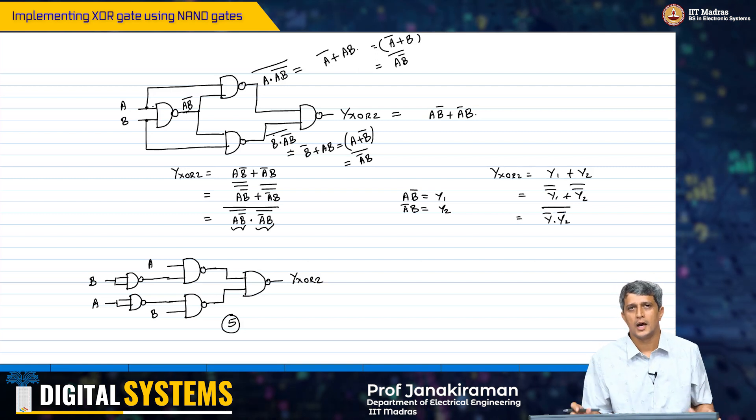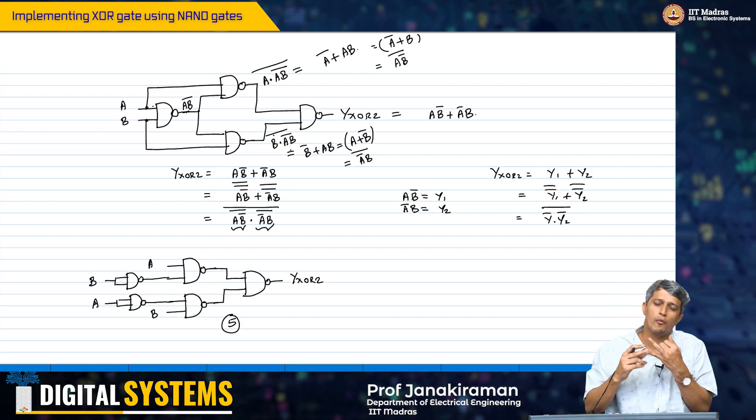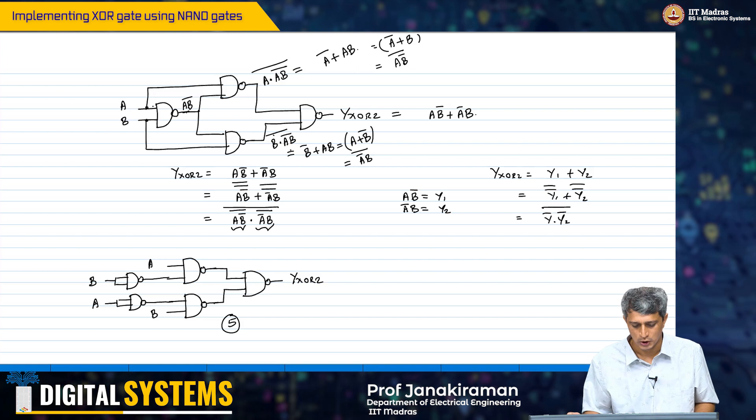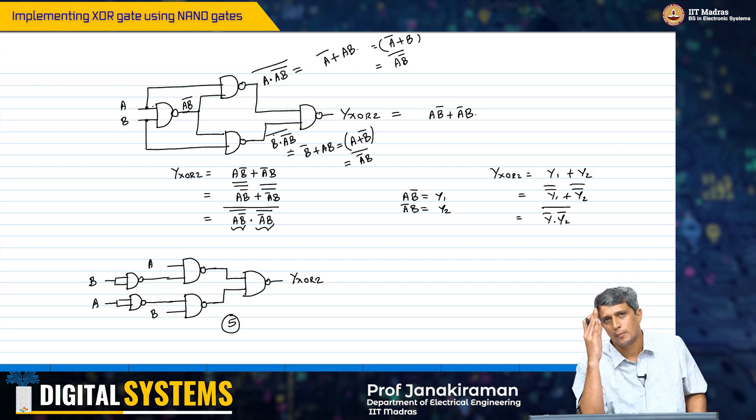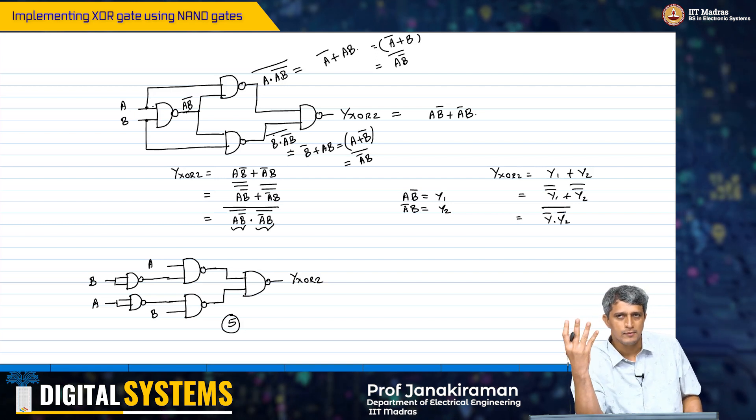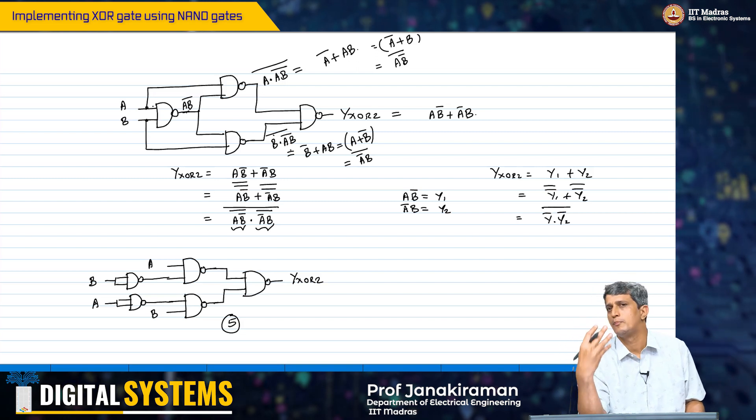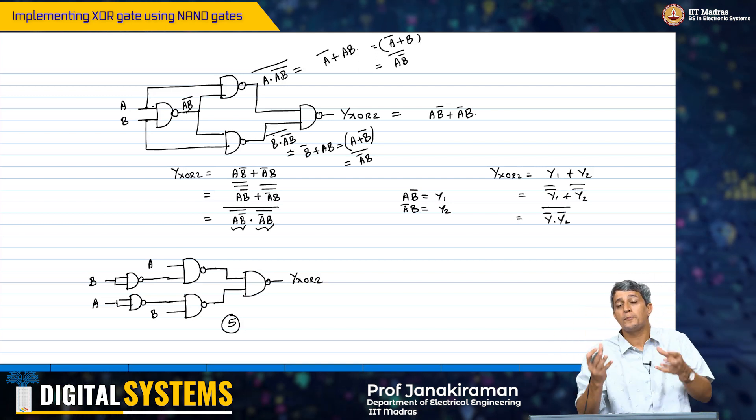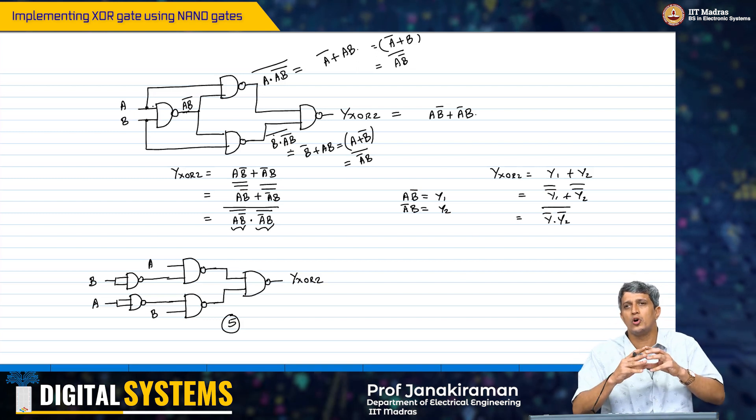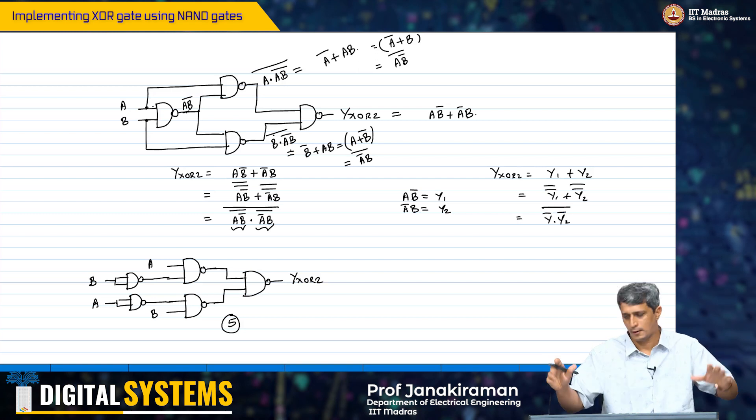The focus is to reduce the gate count because one, it will reduce the area. Hopefully it will also give you some advantages in delay as we will see later. The point I would like to impress from this particular lecture is that many times you will be constrained by what is available for your implementation. You should know how to find an optimal implementation with those available gates and proceed with your design.